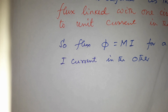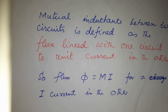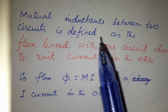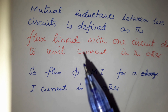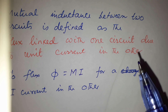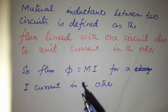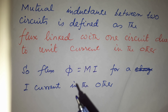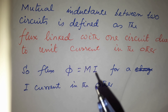In this experiment, we are going to measure the mutual inductance between two coils. Mutual inductance between two circuits is defined as the flux linked with one circuit due to unit current in the other. If I is the current in one circuit, then the flux in the other circuit is phi equals M times I.